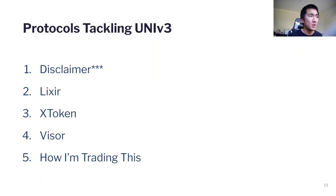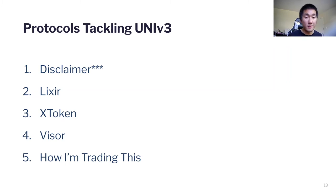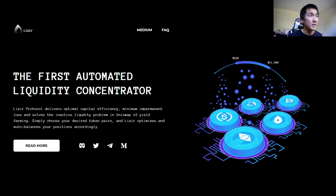Quick disclaimer: I'm making this video on April 15th and these teams are publishing Medium articles almost every single day, so depending on when you're watching this, a lot of facts can change. I also own Visor tokens, and I'll explain why I chose Visor over the others. For Elixir, I'll go over this quickly because they don't have a token yet — they claim to be the first automated liquidity concentrator.